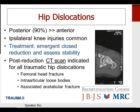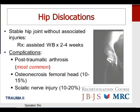Stable hip joints without associated injuries can be treated post-reduction with assisted weight-bearing for several weeks. Complications of hip dislocations: post-traumatic arthrosis is the most common complication. Osteonecrosis of the femoral head occurs in about 10 to 15 percent of all hip dislocations, and sciatic nerve injury is seen in about 10 to 20 percent of all posterior hip dislocations.